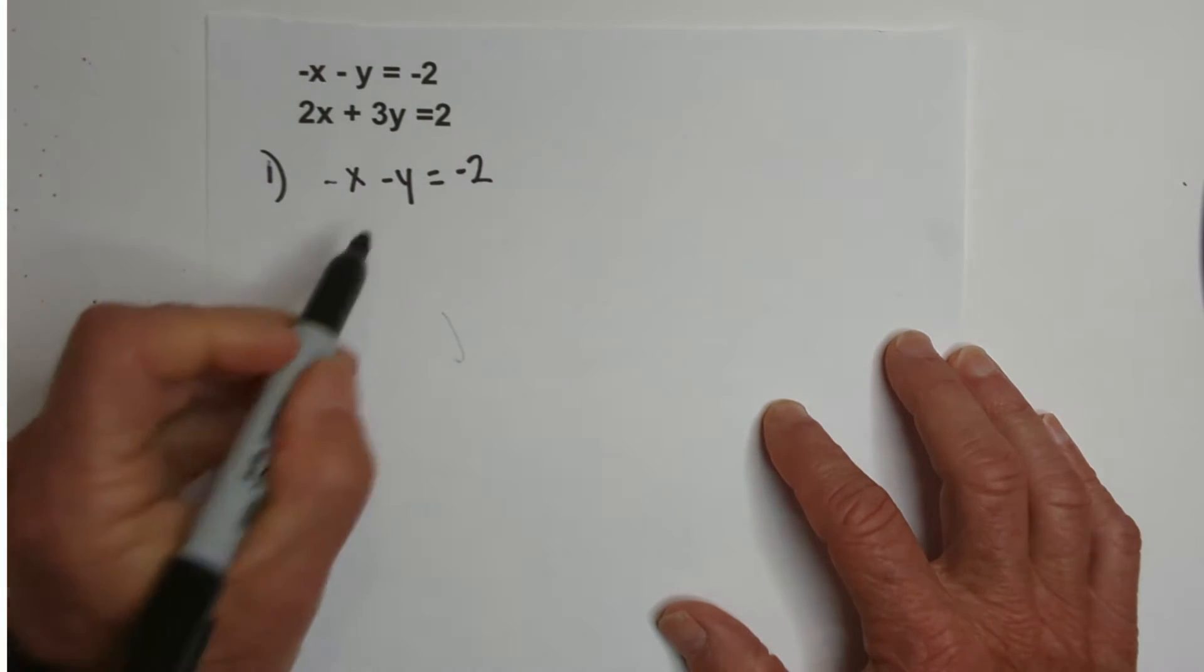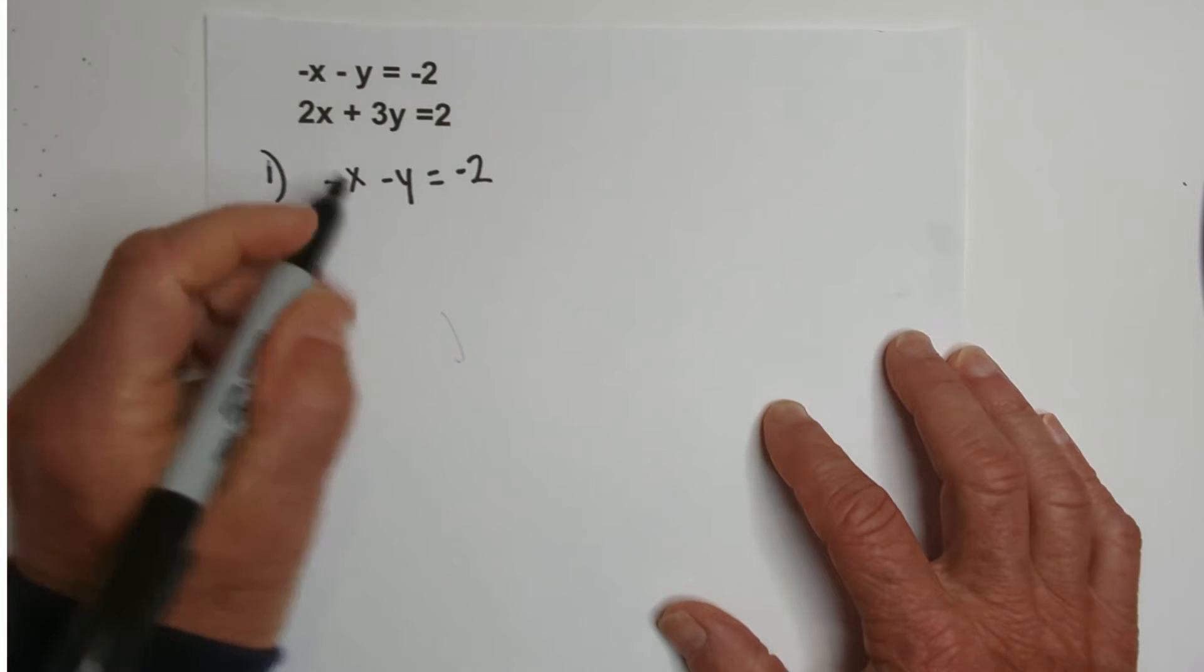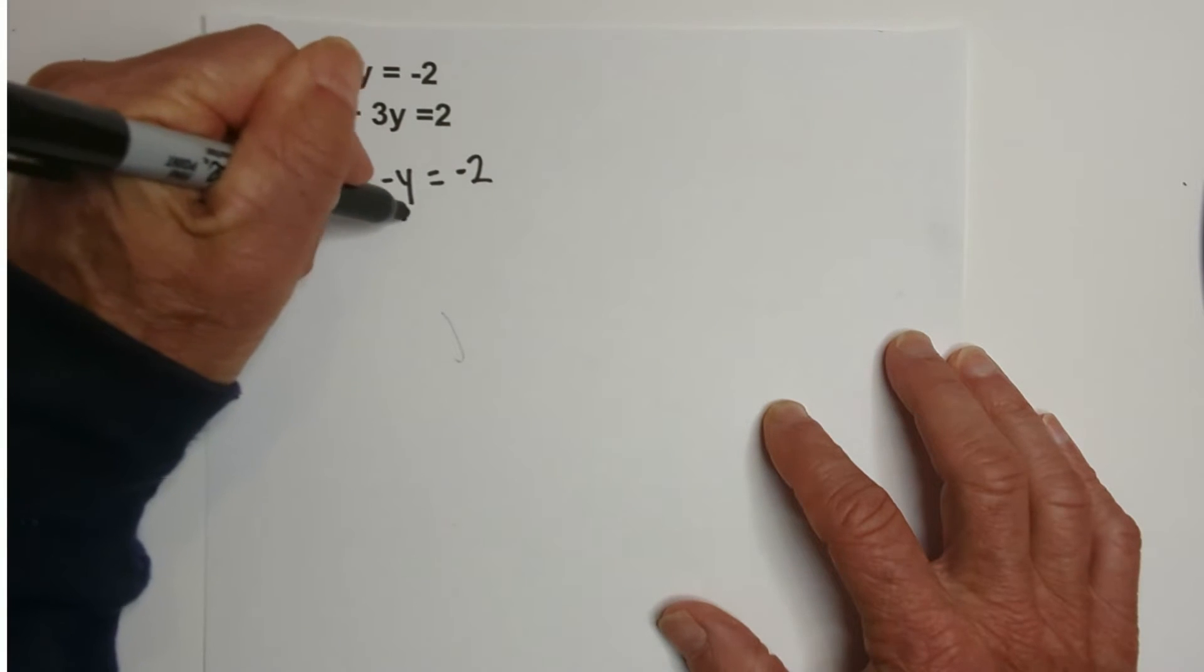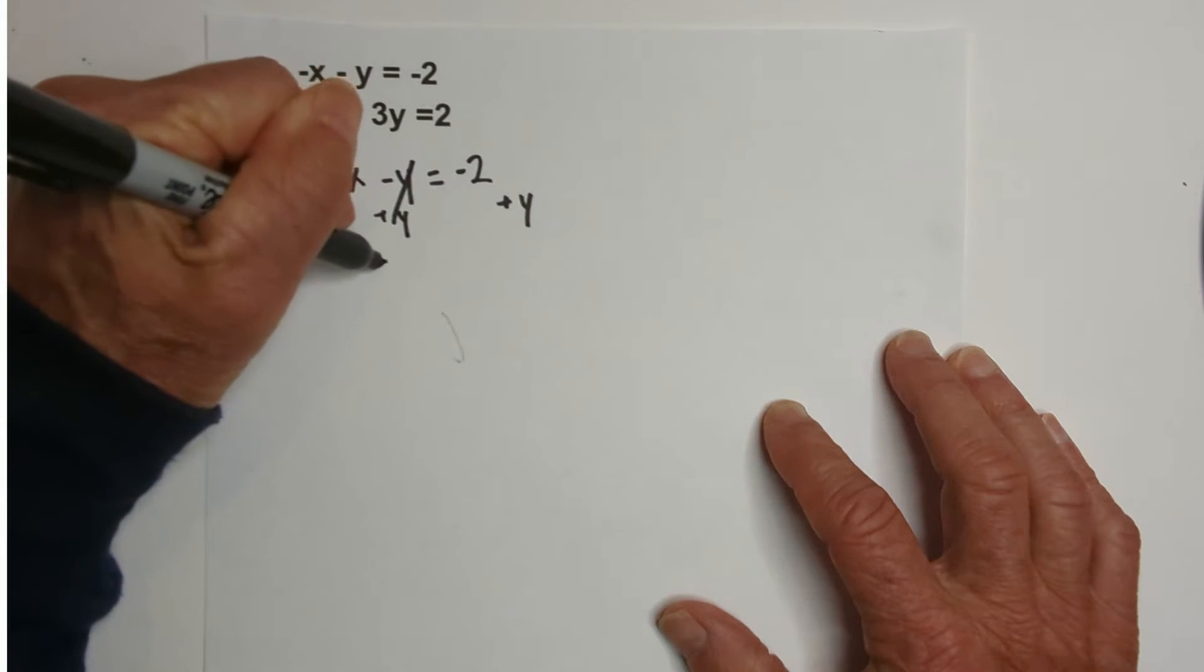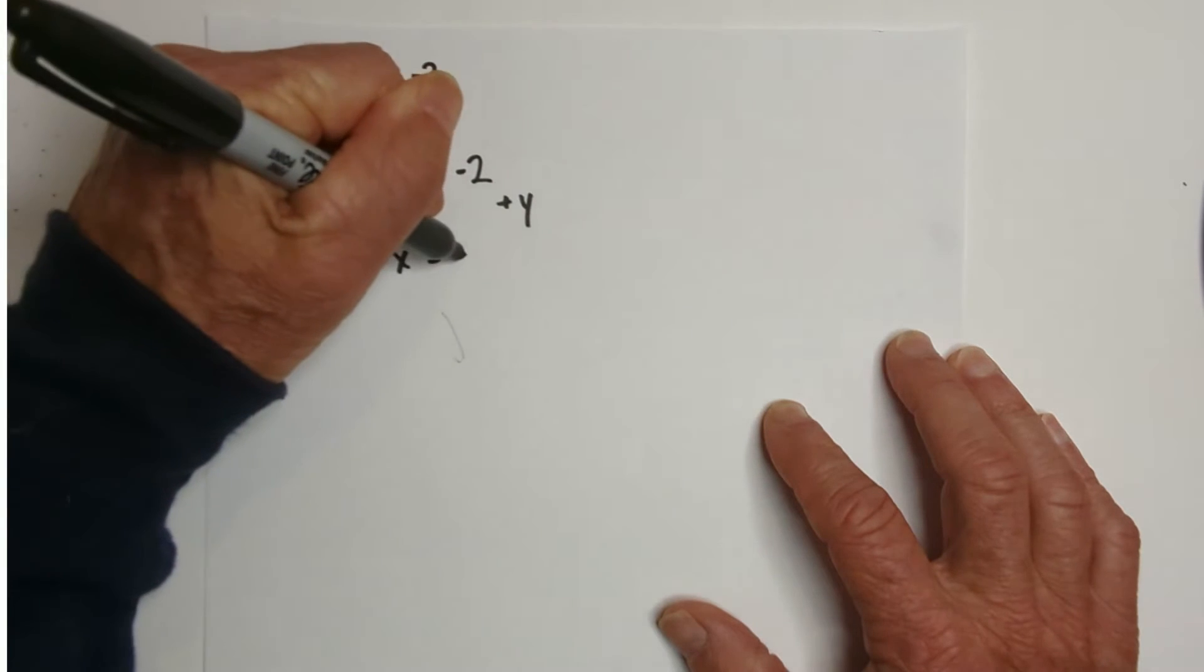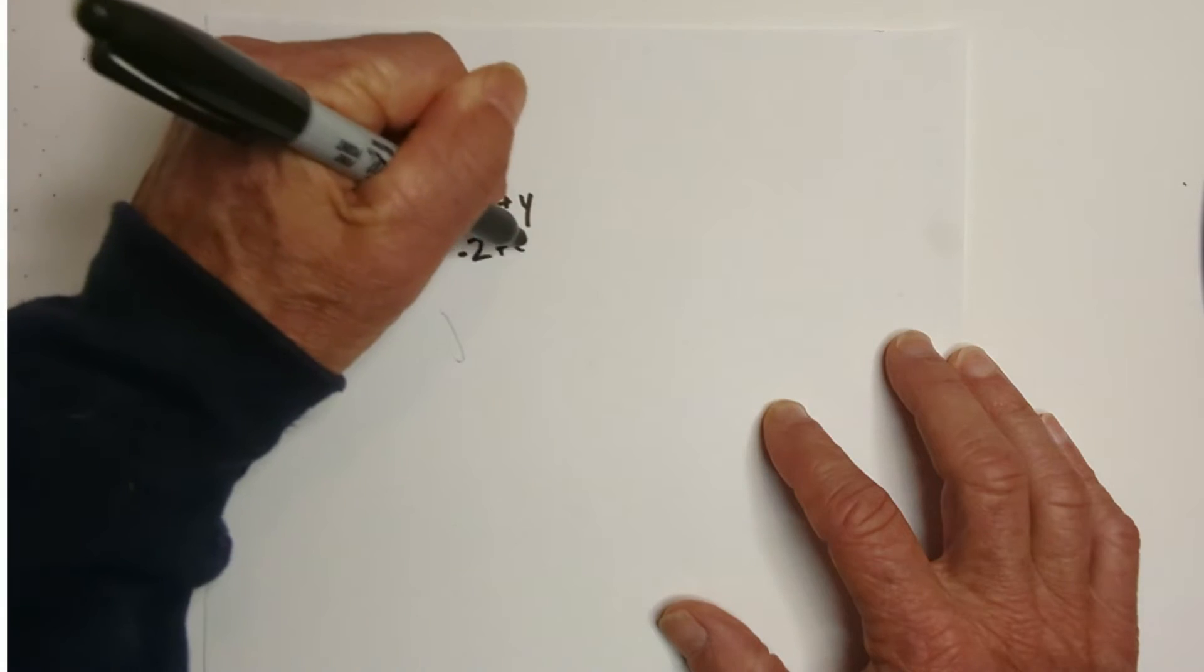So, I'm going to isolate the x. So, first, I'm going to add a y. Okay. So, these cancel. Bring down -x = -2 + y.